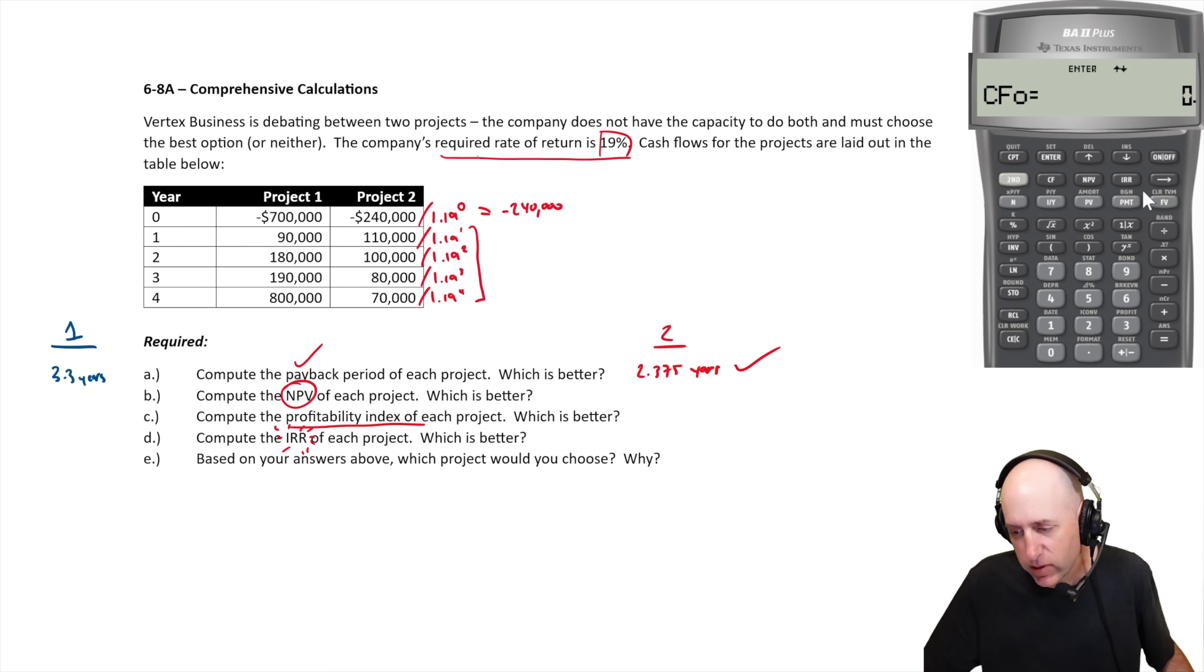So cash flow at time zero, I'm going to just put in a zero because we've already dealt with it. Cash flow at time one, 110, enter. Cash flow at time two, 100. Cash flow at time three, 80. And cash flow at time four, 70. So I'm going to compute the net present value, my discount rate is 19. Hit the down arrow, hit compute, 245,433.